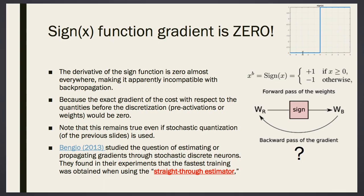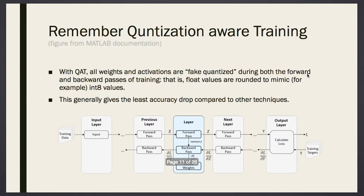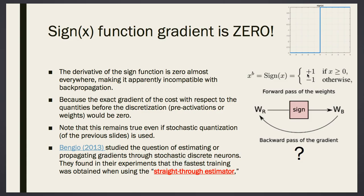If you use signum and the analytical gradient of signum, you stop learning. So instead of using the analytical gradient of signum, you must use something else that doesn't make gradients vanish. The analytical gradient of signum is zero. Even if you use stochastic quantization, it is still zero for most of the spectrum. So whatever binarization you use, you cannot use the exact analytical gradient.